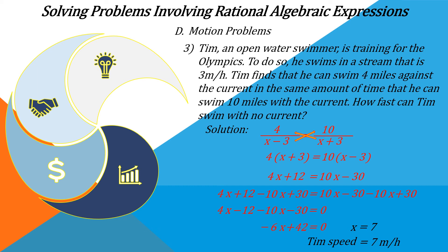We subtract both sides of the equation by negative 42, giving us negative 6X equals negative 42. Dividing both sides by negative 6, we get X equals 7, which means Tim's swimming speed without current is 7 miles per hour.